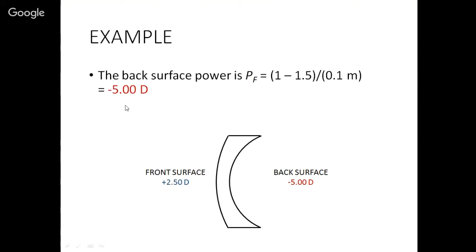Similarly, if we want to compute the back surface power, we take 1 minus 1.5, we divide by 10 centimeters, but we convert it to meters, so 0.1 meters. If you work out that math, and I encourage you to do that on your own if you've got a calculator handy, then you'll get a power of minus 5 diopters. So now we know the front, we know the back, 2.5 and minus 5 respectively. If we add them together, we get a total power of minus 2.5 diopters.